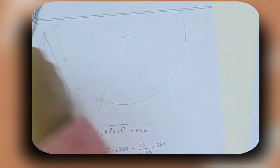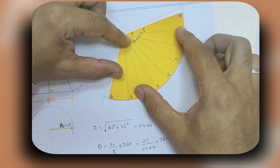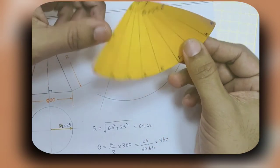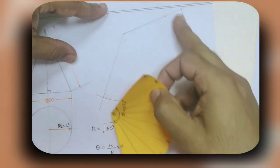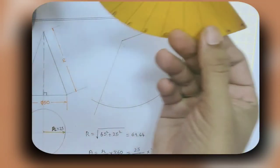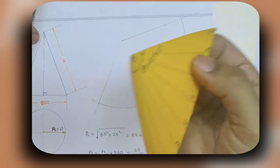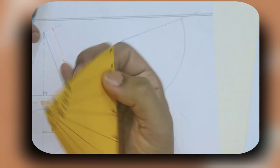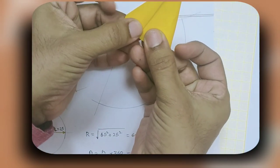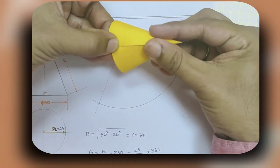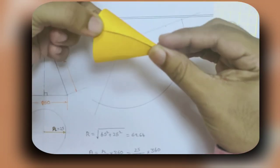When you develop this, this is the development of the cone. When you fold back this here, you will be getting a cone.